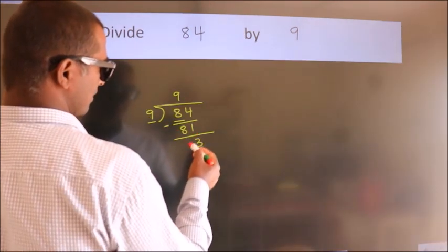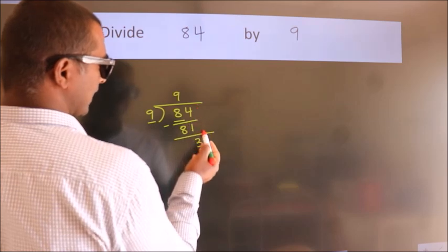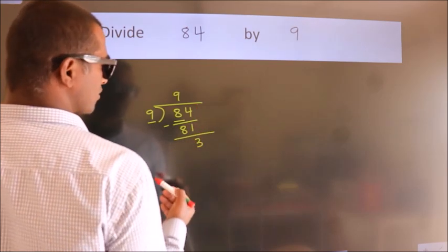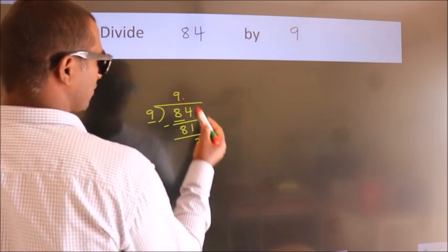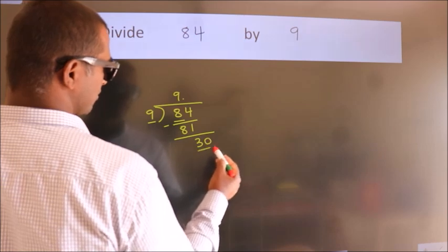After this, no more numbers to bring down. So what we do is we put a dot and take 0. So 30.